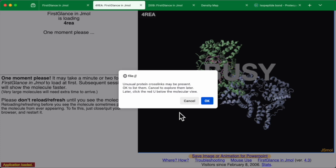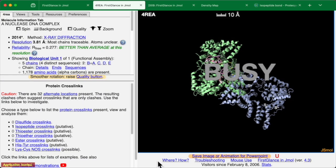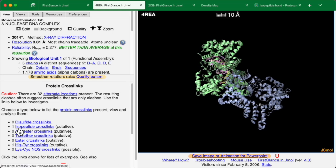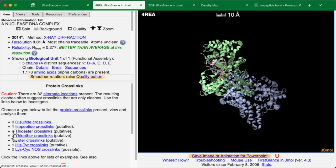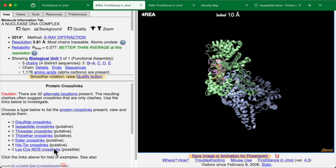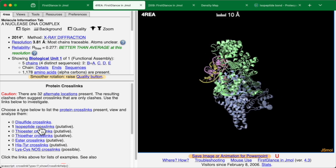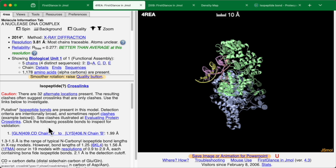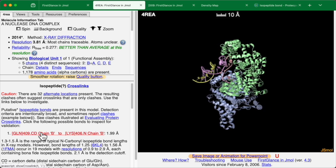Ah, it says there may be crosslinks. And it says one isopeptide crosslink and one histidine tyrosine crosslink. Well, let's take a look at that putative isopeptide crosslink.